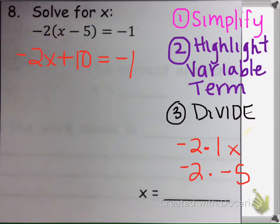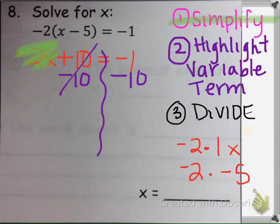We are done simplifying. The next step is to highlight the variable term. We want this to be all by itself, so we need to get rid of that plus 10. We're going to subtract 10, or put a negative 10 on both sides of the equal sign. That cancels. Negative 1 minus 10 is negative 11.